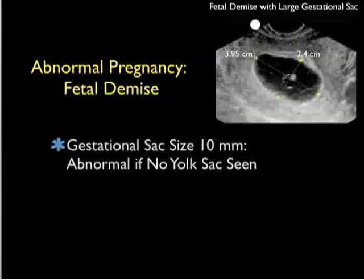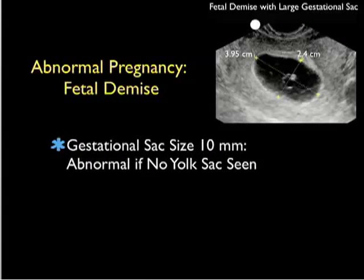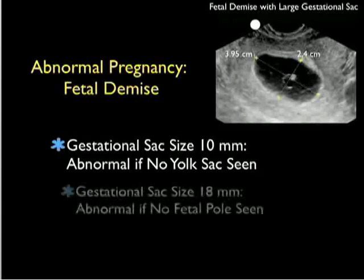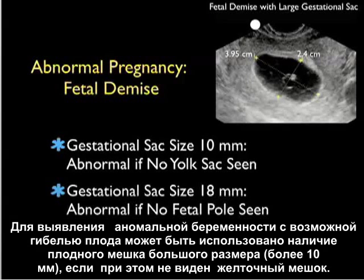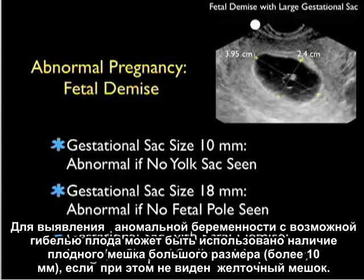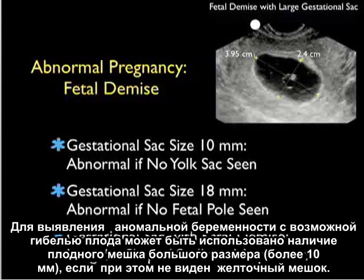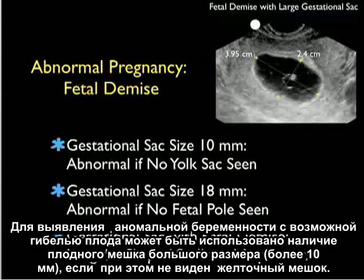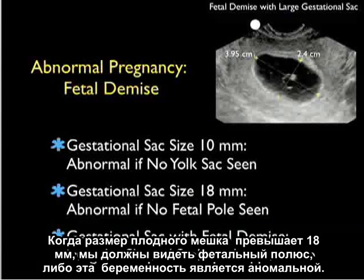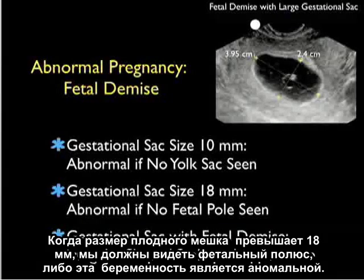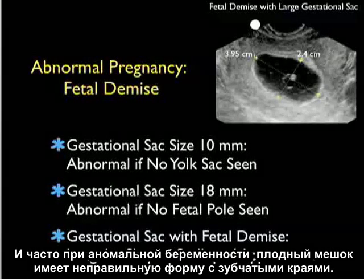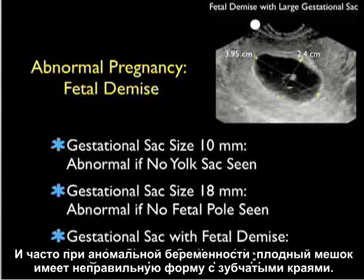While fortunately most pregnancies have a successful outcome, unfortunately there are going to be some abnormal pregnancies consistent with fetal demise in the emergency department. Some measurements we'll use to determine an abnormal pregnancy include: a gestational sac greater than 10 millimeters if no yolk sac is seen; once the gestational sac is greater than 18 millimeters, we should see a fetal pole. Many times the gestational sac in an abnormal pregnancy will have an irregular shape with a scalloped appearance.